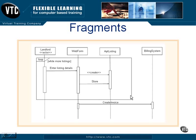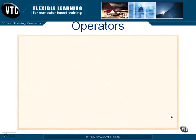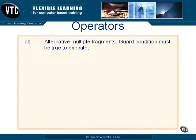So this interaction frame shows more complex behavior than you'll see in a simple sequence diagram. There are a number of different operators you might want to use to break your sequence diagram into fragments and create interaction frames for various segments. The ALT operator stands for alternative multiple fragments, and it will be associated with a guard condition — the guard condition must be true for one of the fragments to execute. The Loop operator means the fragment may execute multiple times as indicated by a guard; as long as the guard condition is true, the fragment may execute multiple times.